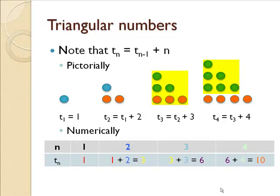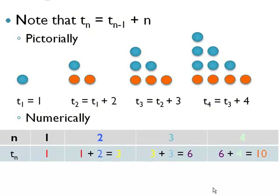We can also see this numerically for n and T sub n, that we take a number, the previous triangular number plus the index, so 1 plus 2 to get 3. And now we take the previous triangular number plus the index to get 6, and so on.